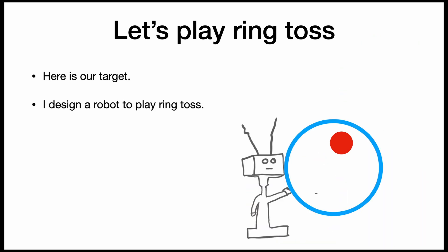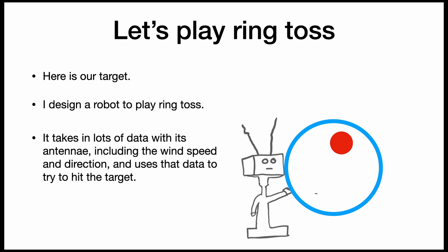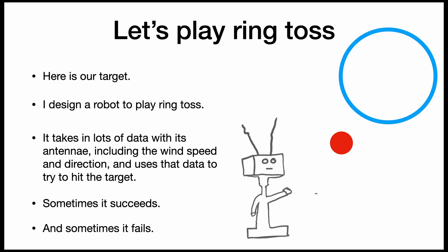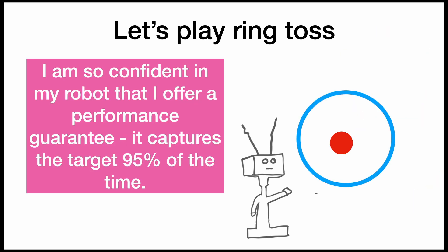I design a robot to play ring toss. The robot takes in a lot of data, including the wind speed and direction, and uses that data to try to hit the target. Sometimes it succeeds, and sometimes it fails. I am so confident in my robot that I offer a performance guarantee: it will capture the target 95% of the time.